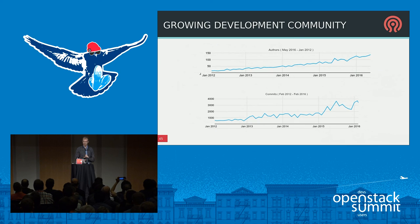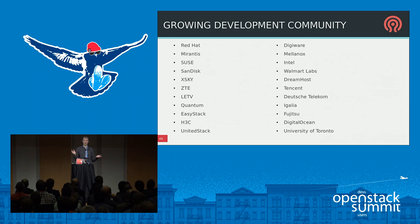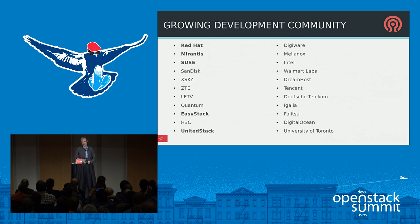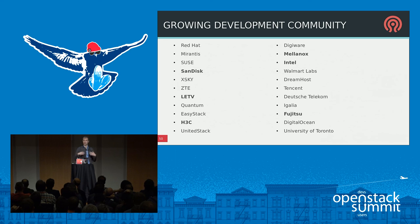The Ceph development community is growing. The number of contributors has been increasing linearly for several years, as has the amount of code and features we're producing. Looking at the top contributors for the Kraken release, what's exciting isn't just the number of organizations but the breadth — cloud service providers, OpenStack companies, cloud operators like DreamHost, Tencent, and DigitalOcean, telecoms, OEMs building hardware to support Ceph, and even traditional storage companies who recognize Ceph as something they need to pay attention to.